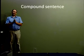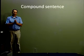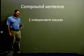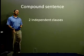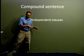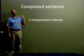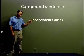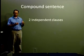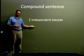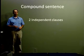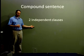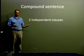Let's move on and talk about the compound sentence. The compound sentence has two independent clauses. If we remember, the simple sentence has one independent clause — the compound sentence has two. And a clause is a subject-verb combination; independent means it can stand by itself, or in other words, it has a complete idea. So two clauses that each have a complete idea.